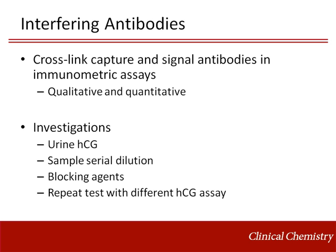Because interfering antibodies can cause false HCG results, clinical suspicion should be high when the result of an HCG test is inconsistent with the patient's clinical scenario. Unfortunately, the laboratory is infrequently aware of the patient's clinical status, making these situations essentially impossible for the laboratory to detect independently. When alerted to the possibility of an interfering antibody, several investigations can be performed. Analyzing the urine for HCG is a logical first step, as HCG is filtered into the urine. Due to their large molecular mass, interfering antibodies are not excreted into the urine, and so do not cause interference. In cases of truly elevated serum HCG, filtered HCG molecules would be detected in the urine, so the absence of its detection suggests the presence of an interfering antibody.